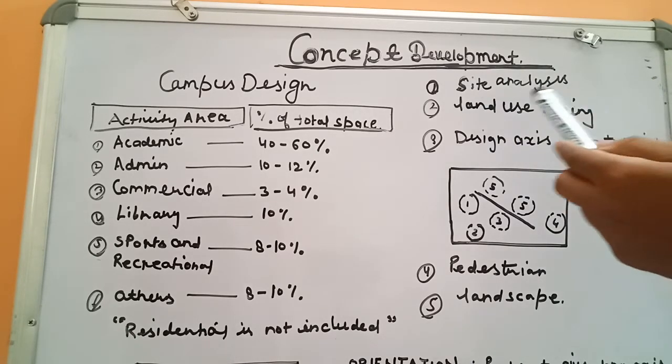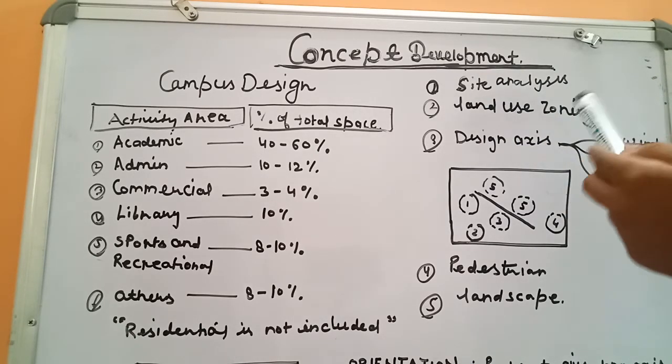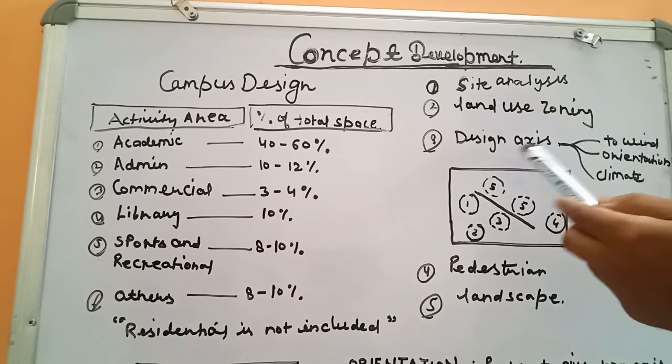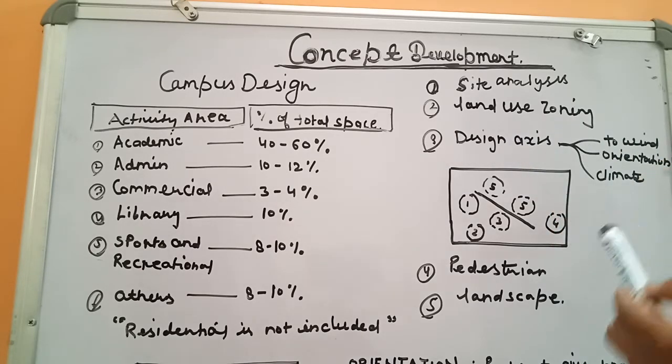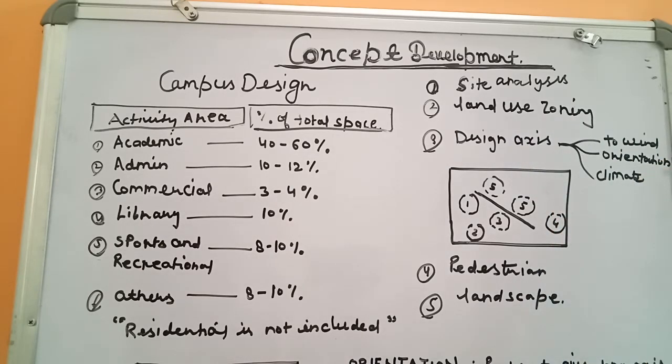So to summarize, these were the key points: site analysis, land use zoning, design axis, pedestrian planning, and landscape.